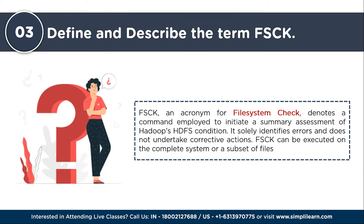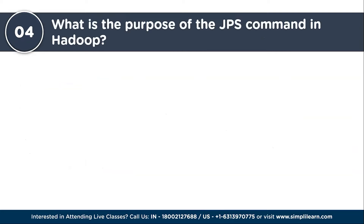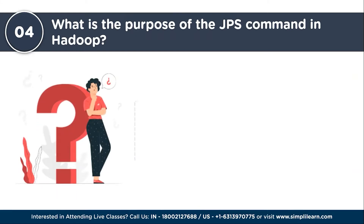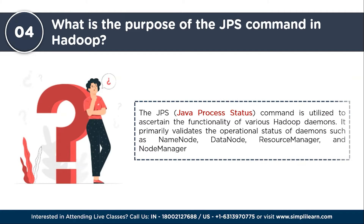The next question is: what is the purpose of the JPS command in Hadoop? The JPS — Java Process Status — command is utilized to ascertain the functionality of various Hadoop daemons. It primarily validates the operational status of daemons such as name node, data node, resource manager, and node manager.